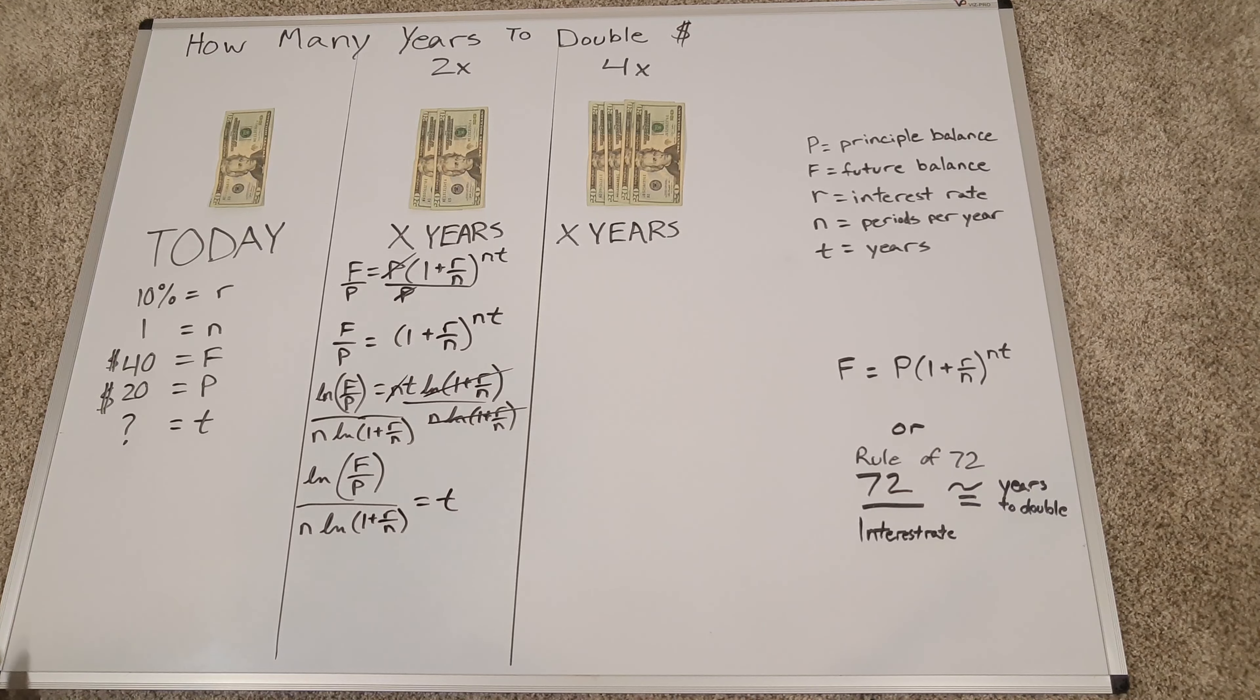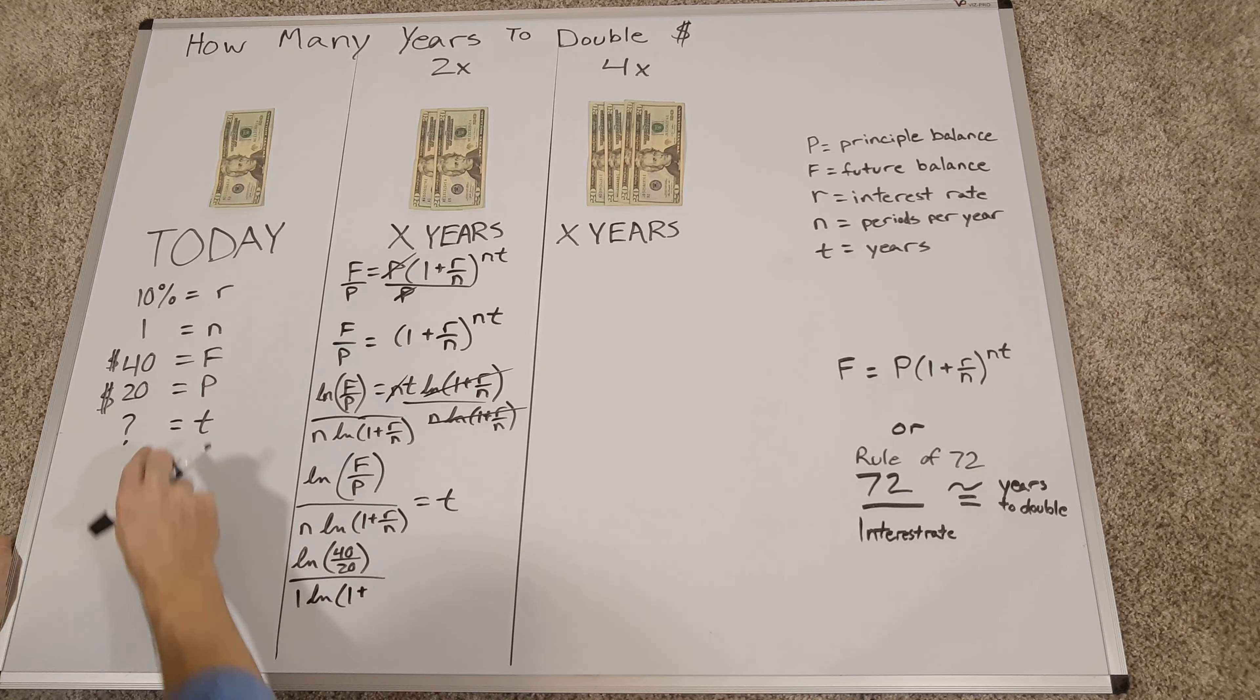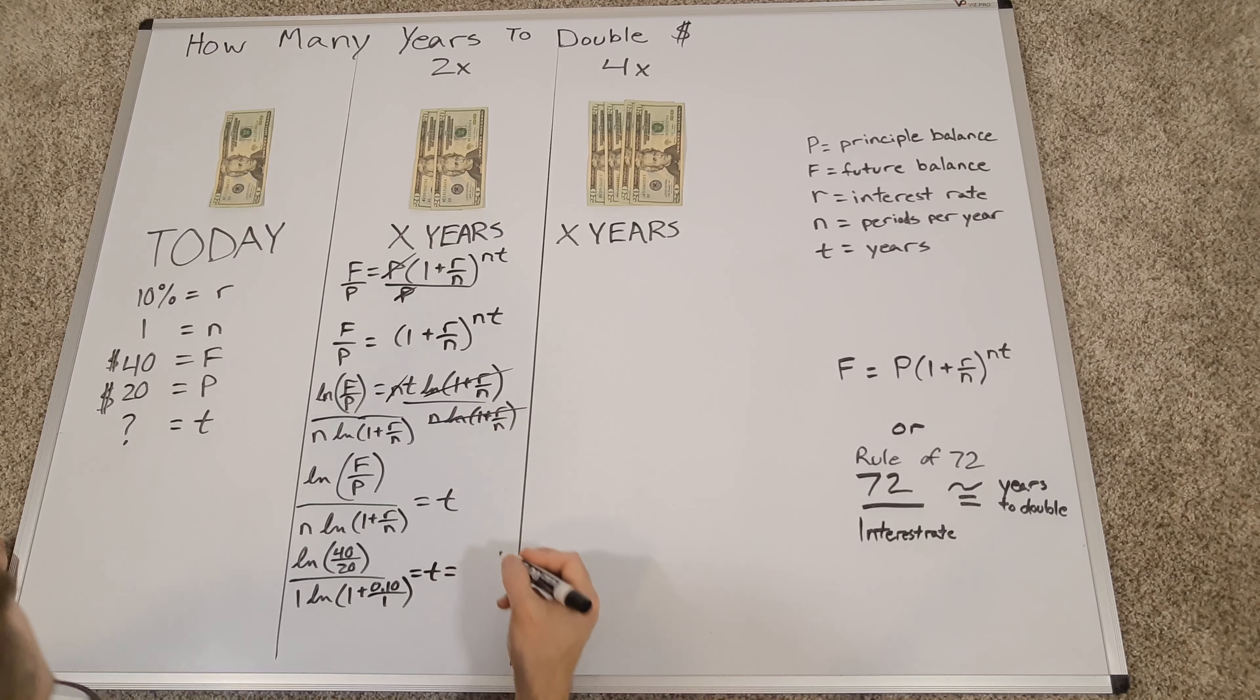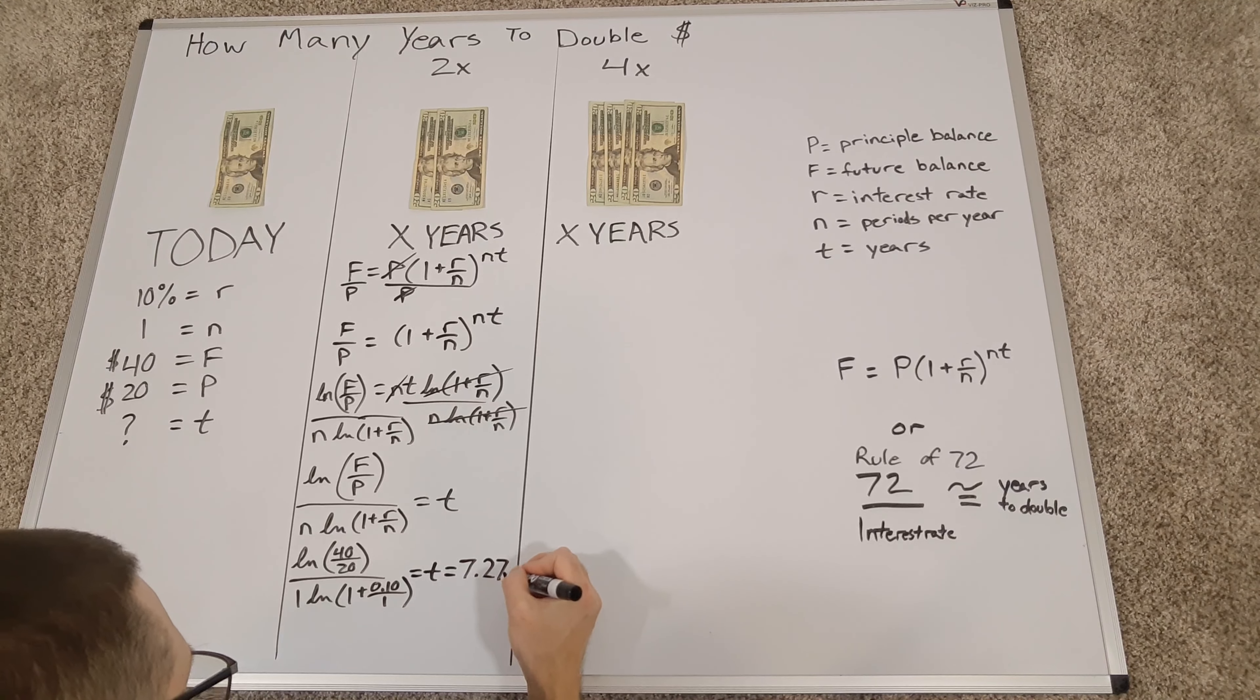So we can plug in these values and what you'll get is you have the natural log of 40 over 20 divided by n. n is 1 in our case, natural log, and then we have 1 plus, you're going to use that 10% over here, and that's going to be 0.10 over your n, which is 1, and where you end up with is t, which is equal to 7.27 years.